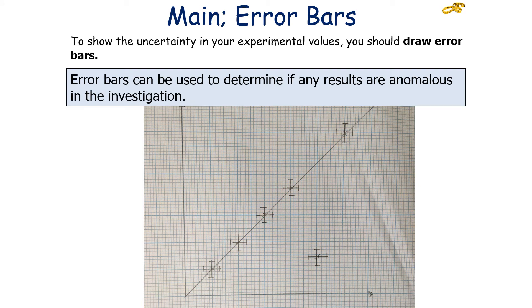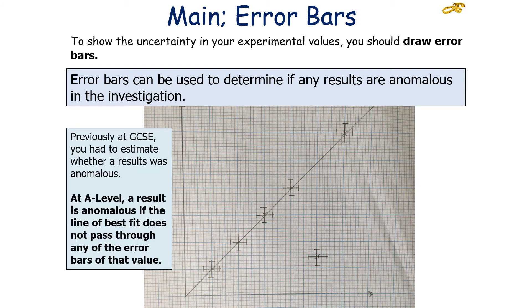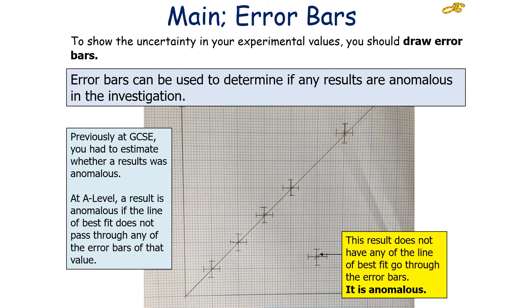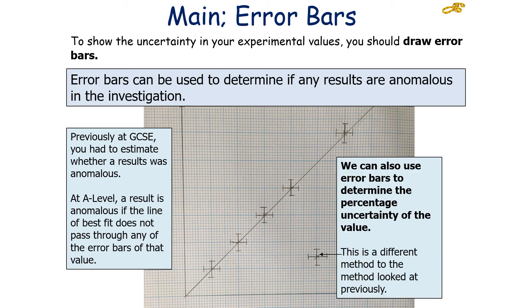Error bars can be used to determine if any results are anomalous. Previously at GCSE, you had to estimate whether a result was anomalous. But at A-level, a result is anomalous if the line of best fit does not pass through any of the error bars of that value. So this result at the bottom does not have any of the line of best fit pass through its error bars — it is anomalous.